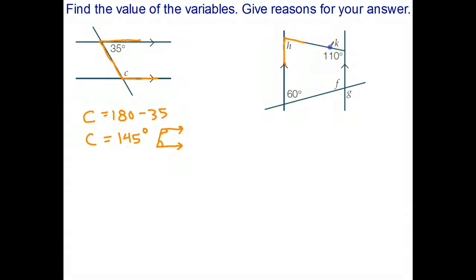H. And there's 110, so there's the C rule. Therefore I can say H plus 110 adds to 180, so I can say H equals 70 degrees. Once again I'm using the C rule that co-interior angles add to 180.